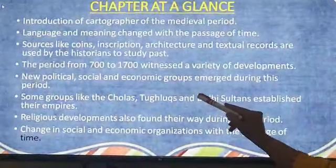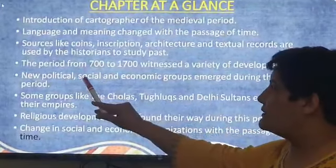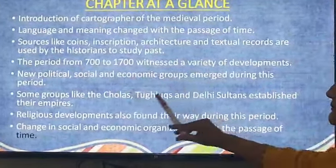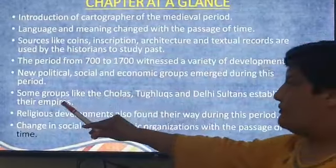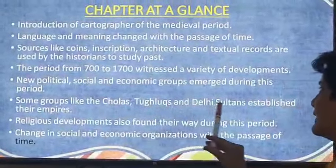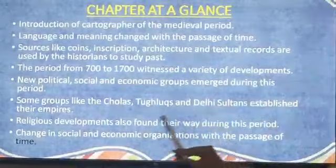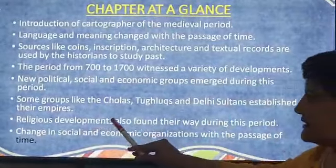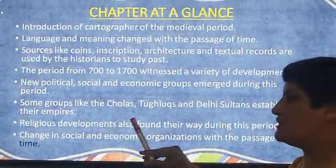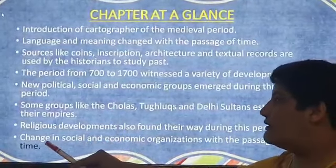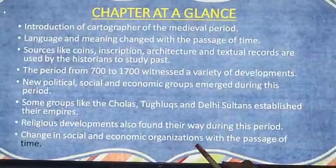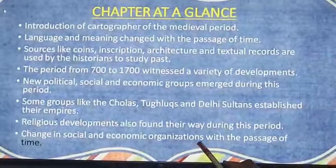In this period, there was a variety of political, social and economic groups that emerged. We will read about the Cholas, Tughlaqs and the Delhi Sultans. Religious developments were also there as the Muslim religion was introduced in this time. There was change in the social and economic organization with the passage of time.